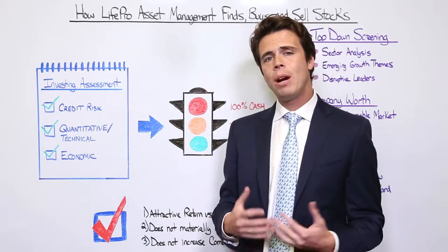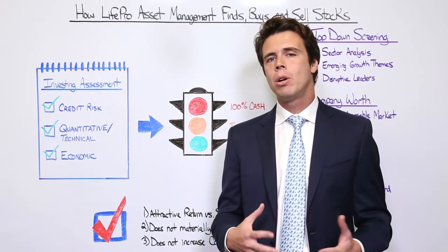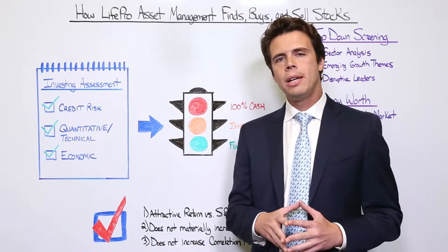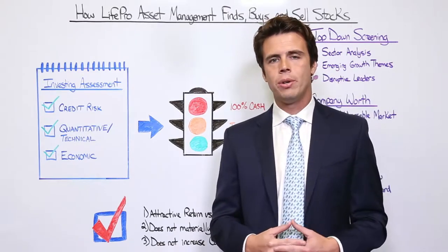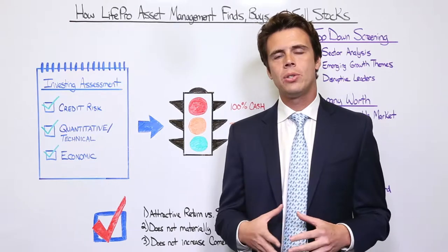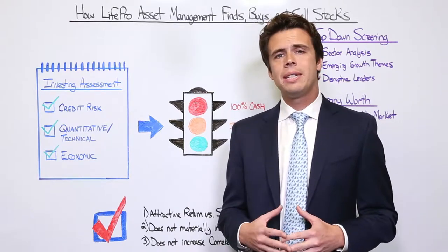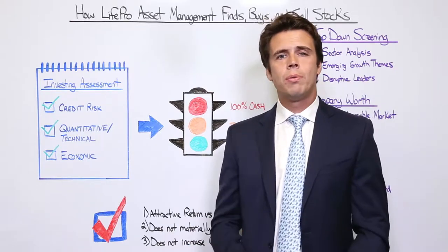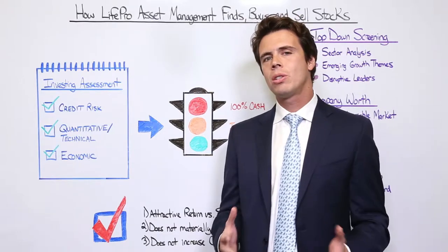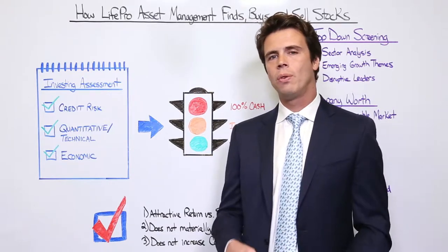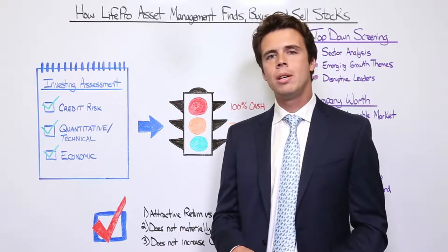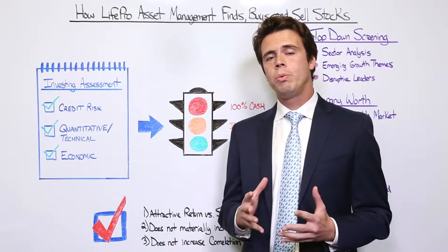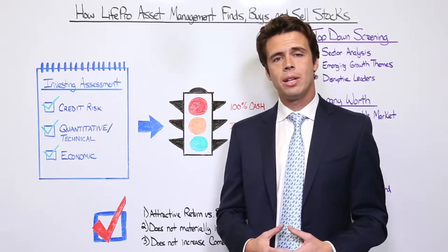The last piece, and perhaps the most important, are the macroeconomic indicators that we track. Specifically, we look at leading economic indicators — those economic reports that tend to give us a window into what the economy is going to look like over the next three to six months. For example, non-farm payrolls, jobless claims, and the inventory cycle are the types of things we look at when determining how much risk to take in a client's portfolio.